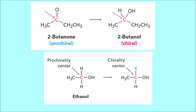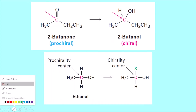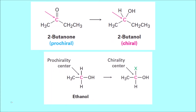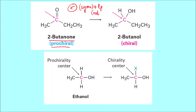Let us understand this with the help of an example. Here you can see this is the prochiral center. Why is this achiral? Because for this carbon, we count the number of sigma bonds plus lone pairs not involved in resonance to determine hybridization.